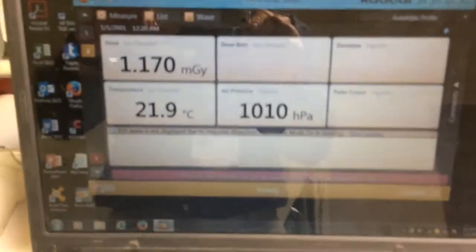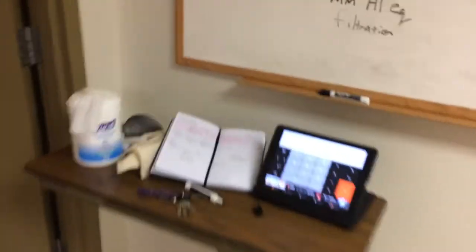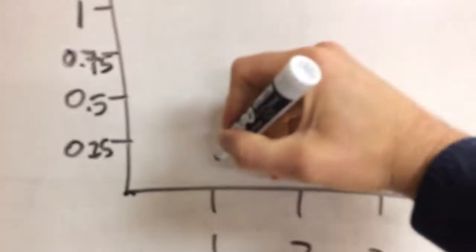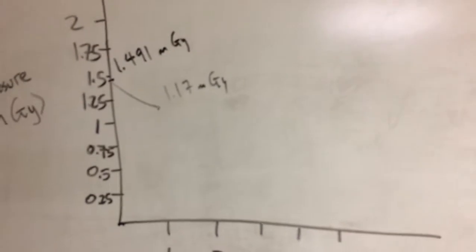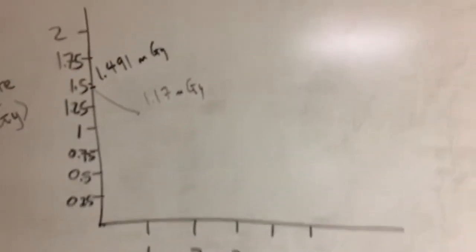Looking here at our ion chamber, we got 1.17 milligray. So we had a millimeter of aluminum, 1.17. The experiment so far has proven right. It decreased a little bit.